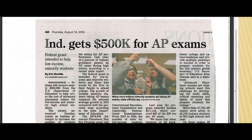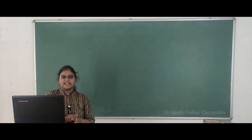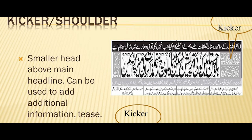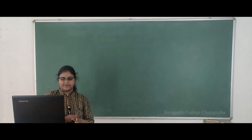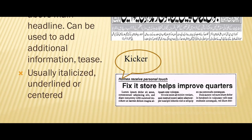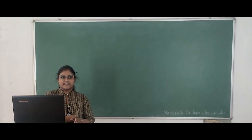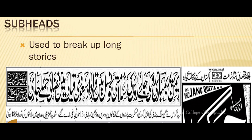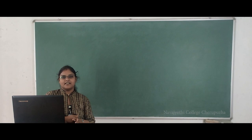The next type of headline is the kicker or shoulder — a smaller head above the main headline, which can be used to add additional information. Kickers are usually italicized and bold. The next type is subheads, which are used to break up long stories. I hope you understand my class. Thank you.